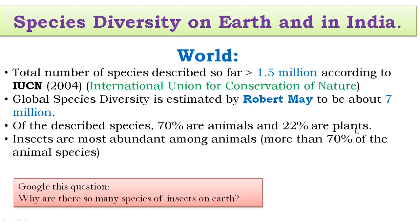Of the 1.5 million described species, 70% are animals and 22% are plants. Among animals, insects are the most abundant, comprising about 70% of animal species — meaning out of every 10 animals, seven are insects. You can google why insects are so successful on this planet and what led to their diversification.